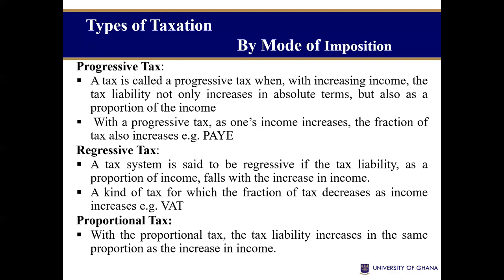You can also classify tax by mode of imposition. There are three main types. The first is referred to as a progressive tax. When you say a tax system is progressive, it means that as your income increases, you pay more tax — not just in absolute terms, but in proportionate terms you pay a higher rate of tax than before.